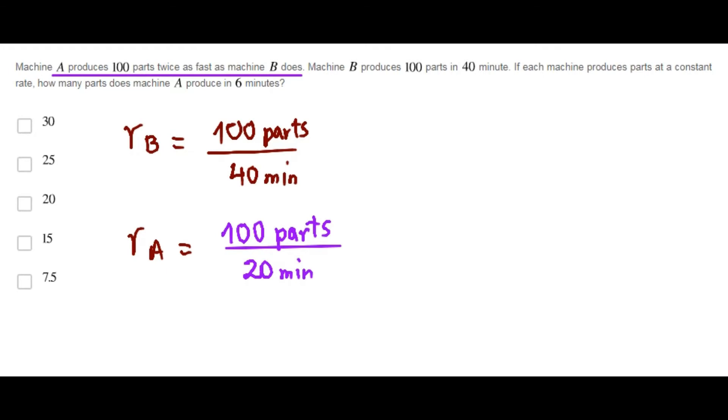Now, let's read the question again. How many parts does machine A produce in 6 minutes? Since work is the rate times the time, the rate of A is 100 over 20 and the time is 6 minutes.